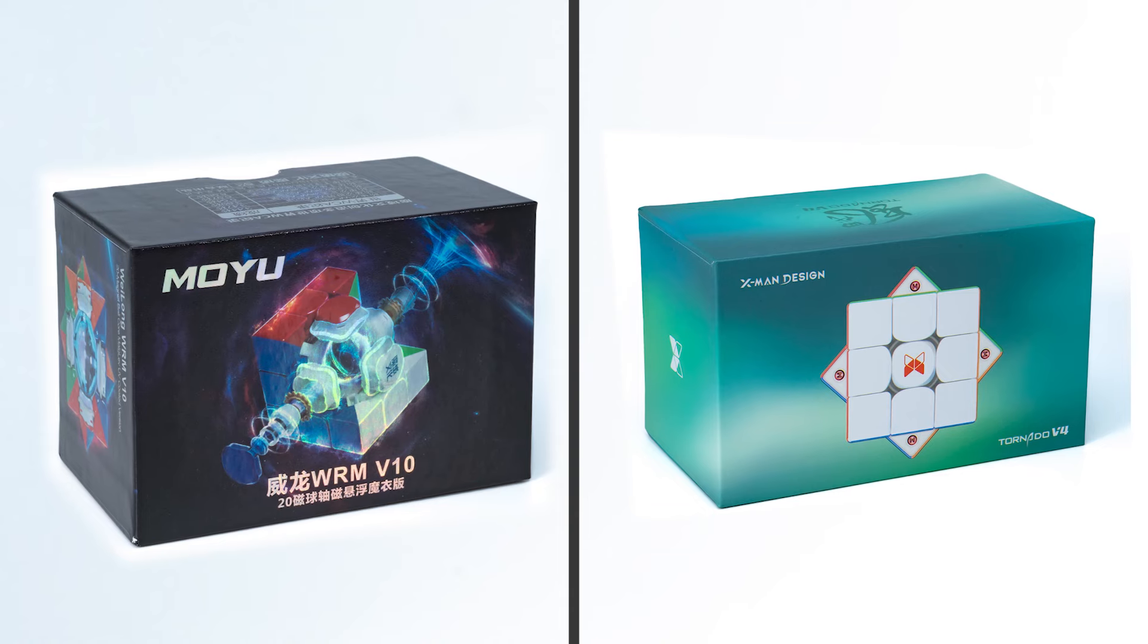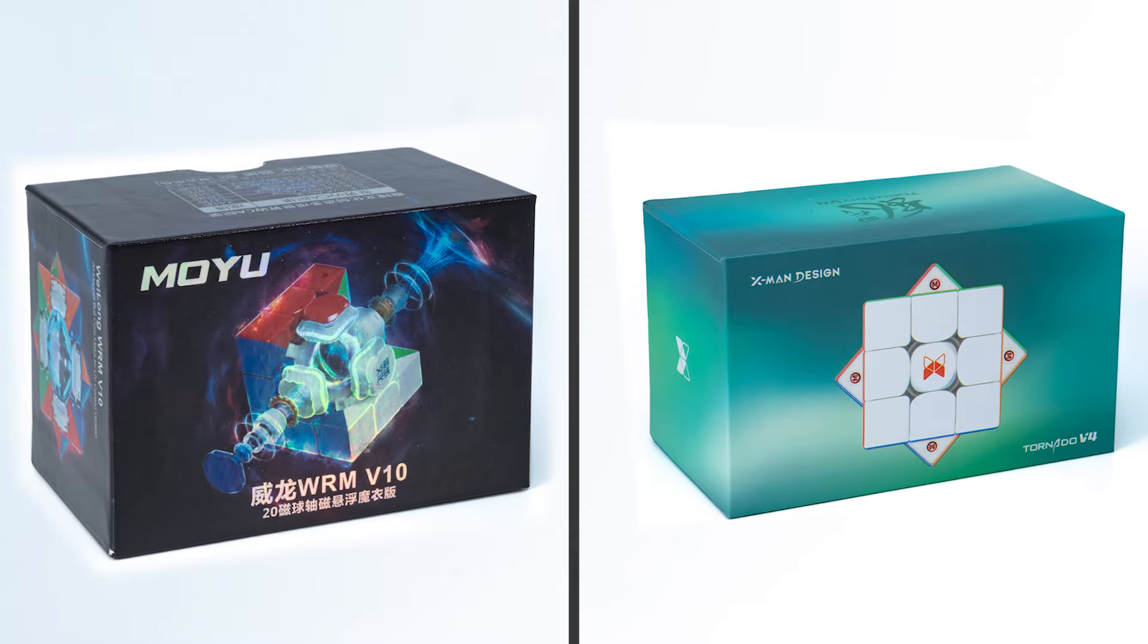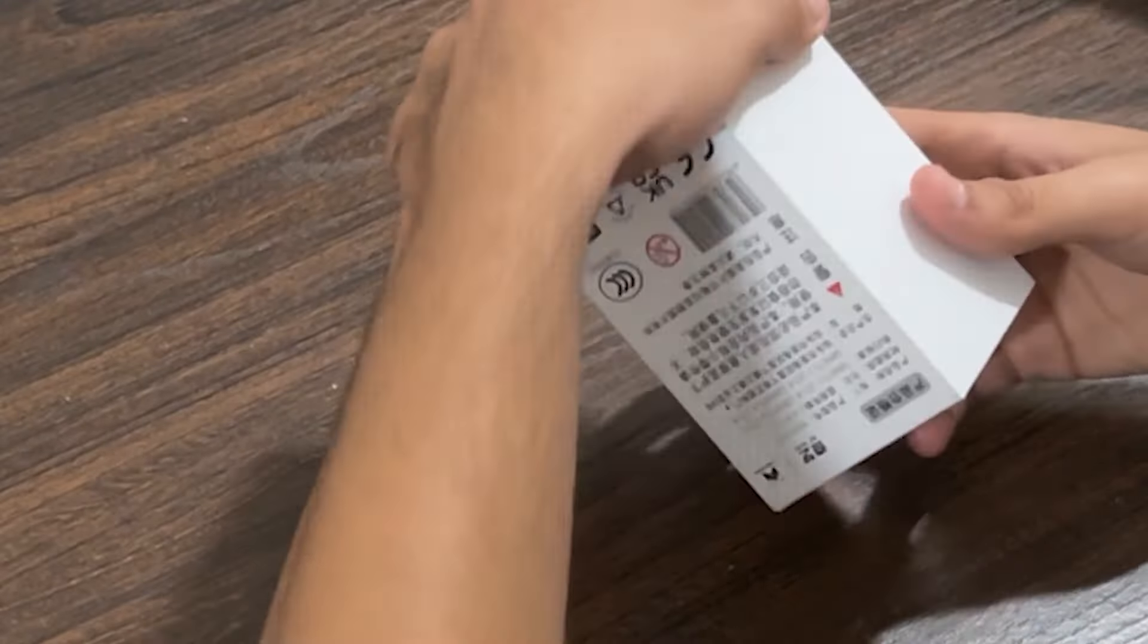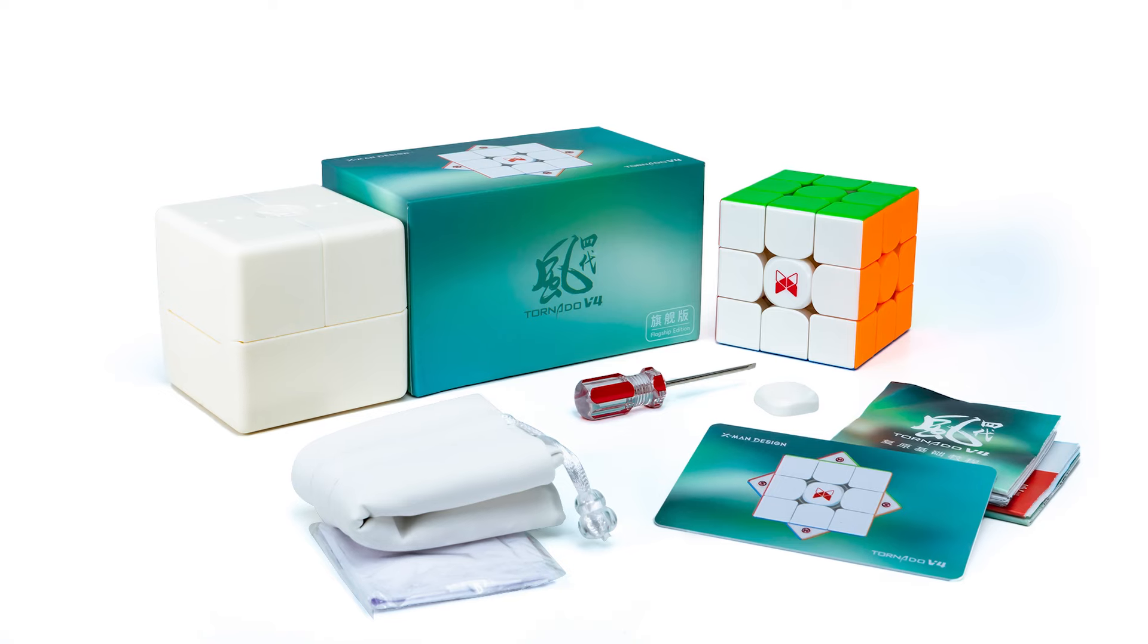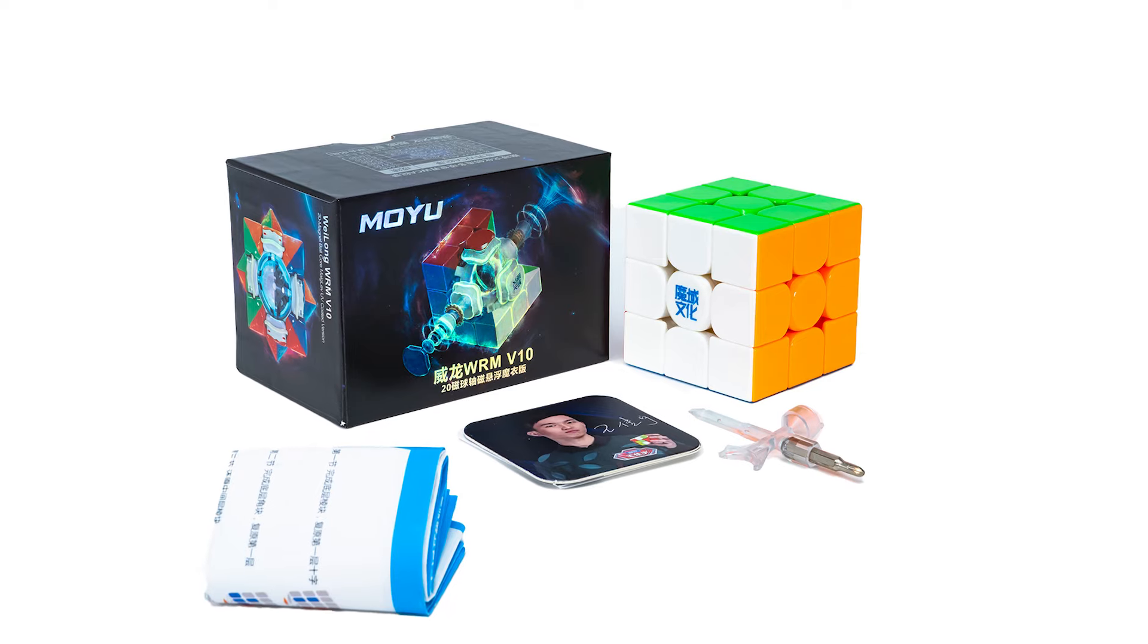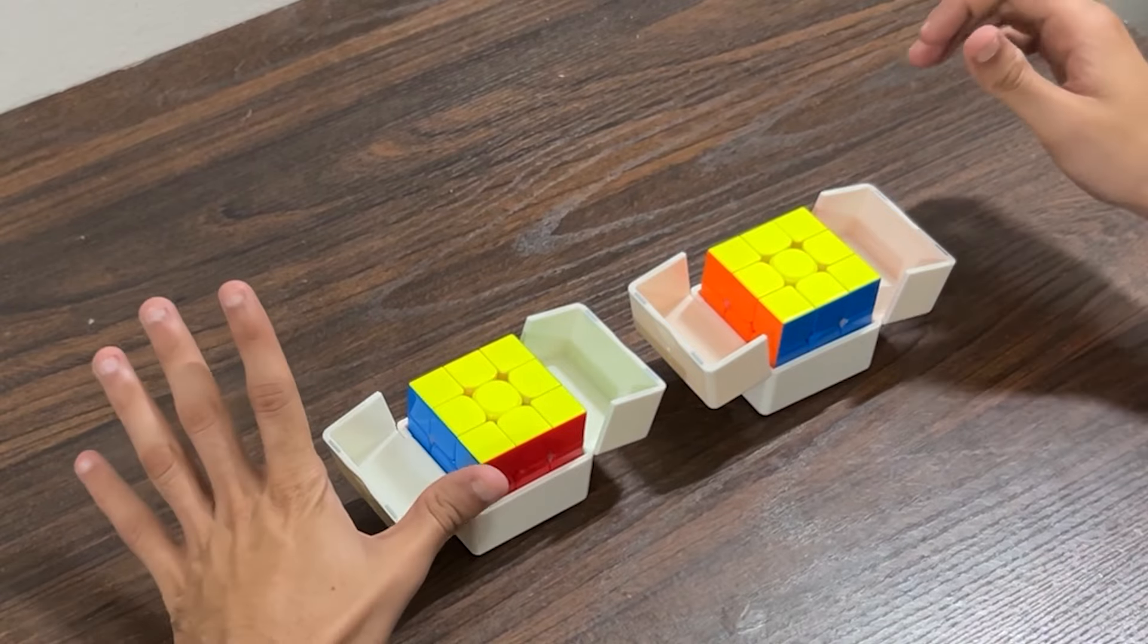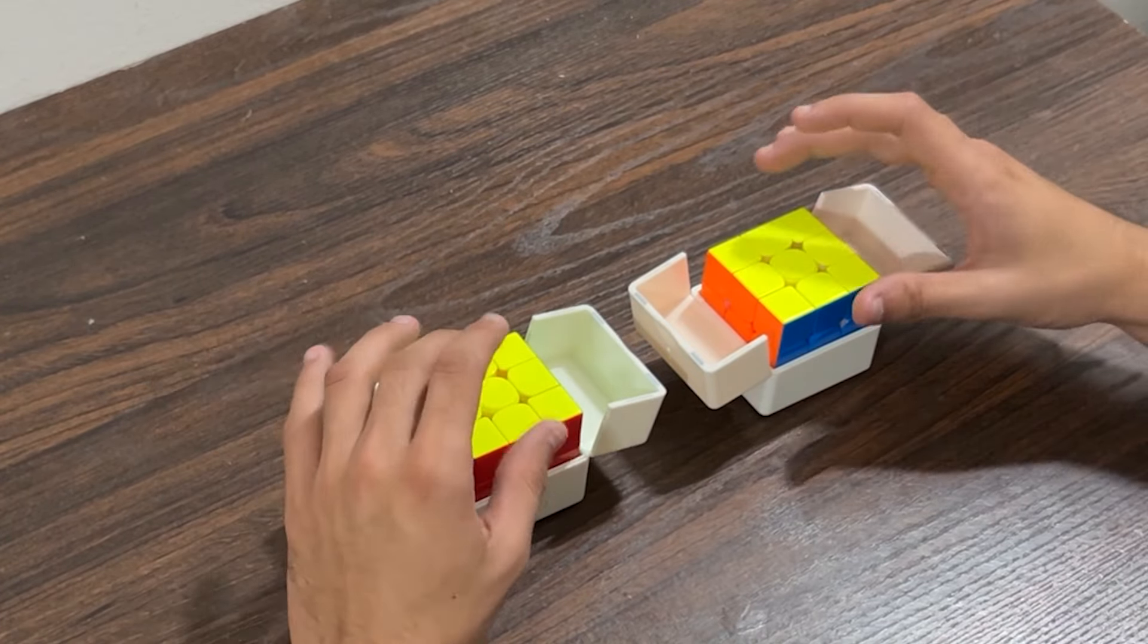Number one, packaging. When it comes to packaging, both the Moyu Weilong WRM V10 and the X-man Tornado V4 keep it simple. Each cube comes in a minimalistic package that includes a cube box and a separate accessories box. There's no over-the-top presentation, but everything necessary is there. The simplicity keeps the focus on the product rather than the flashy presentation.